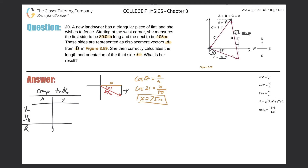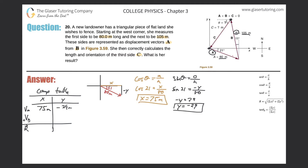Now for the y value: we have the hypotenuse, we have this angle, and we're looking for the opposite side, so we use sine. Sine of 21 equals negative y over 80, so negative y equals sine of 21 times 80, giving us 29. Remember it's negative, so it's negative 29 meters. These are the components for vector a. The x component is 75 meters and the y component is negative 29 meters.